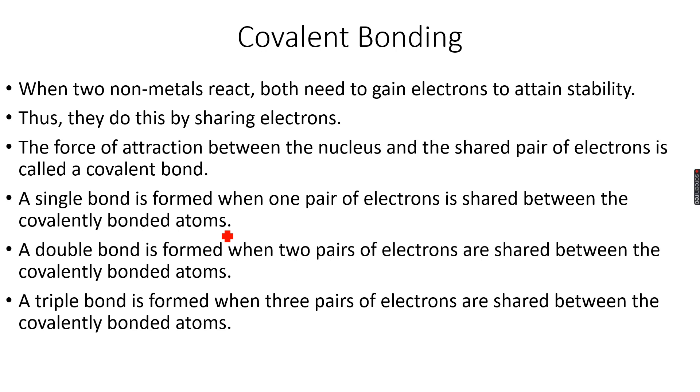So covalent bonding - you've looked at non-metals and realized that non-metals need to gain electrons to attain stability because they want to complete their octet, meaning they want to have their full electronic configuration.